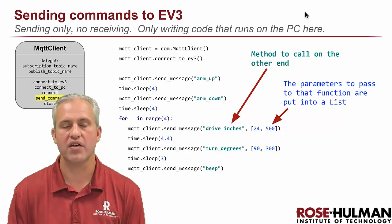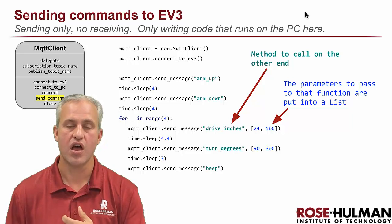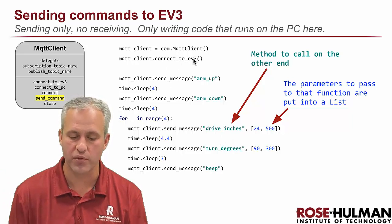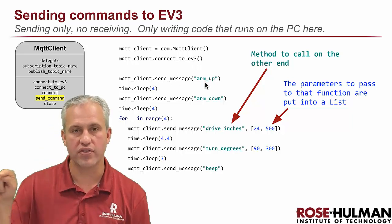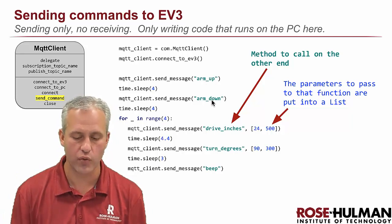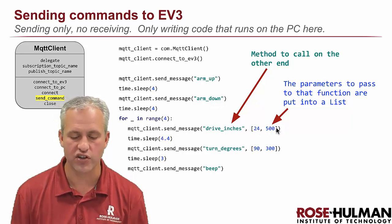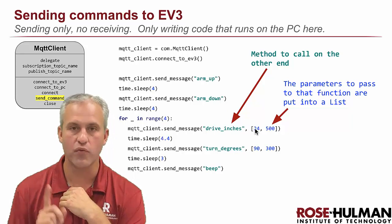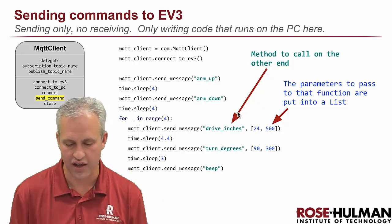Next we want to talk about send message. As we talked about in the under-the-hood video, whenever you send a message, you have to send the name of the method you want to call on the other end. In this example, this is obviously something running on your PC because it says connect EV3. We might send a message that says arm up — that's because we know that the delegate has a method called arm up and it doesn't receive any parameters. Here we call arm down, here we call drive inches, and drive inches does have parameters, so it's a list of the various parameters.